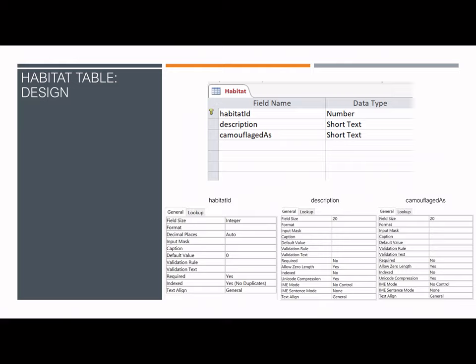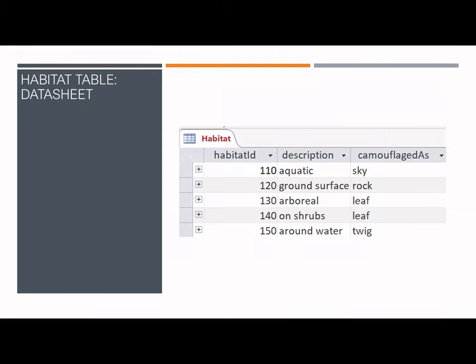The habitat table is designed with the habitat ID expressed by a unique integer number, and the description and camouflage attributes expressed by short text no greater than 20 characters. The habitat ID is the only required attribute as well as the only indexed attribute. The datasheet view shows the three-digit unique habitat ID coupled with a description of the habitat and a camouflage method involved.